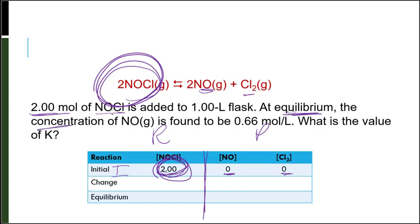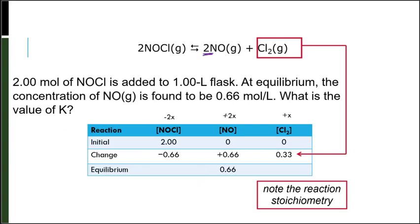We're told that at equilibrium, the concentration of NO is 0.66. So how did we get from 0 to 0.66? The change must have been an increase of 0.66. Notice that NO has a coefficient of 2, so we say plus 2X. Cl₂ has no coefficient, so just plus X. For the reactant NOCl, reactants turn into products, so I lose reactants — I lose 2X. So the change row is: NOCl: −2X; NO: +2X; Cl₂: +X.